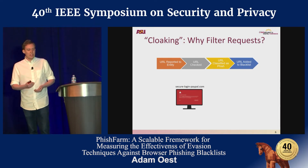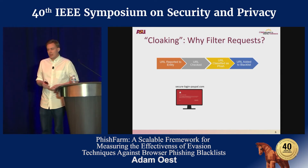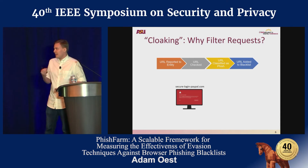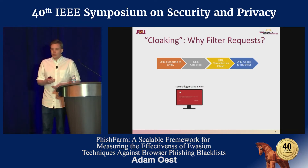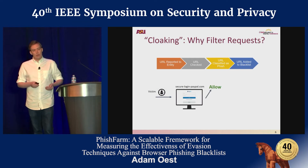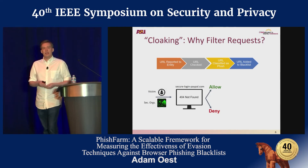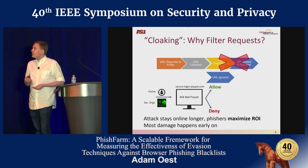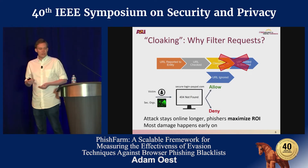Blacklists work as follows: a malicious URL is reported to the anti-phishing entity, that URL is checked, classified as a phishing URL, and added to the blacklist. For example, the website secure-login-paypal.com should show up with a red warning. But if attackers employ evasion techniques such as cloaking, the victim will visit the site and see the bogus login page, while the security crawler gets either benign content or an error message. When this happens, it's possible the URL will never be added to the blacklist, the attack stays live longer, and attackers get a better return on investment.